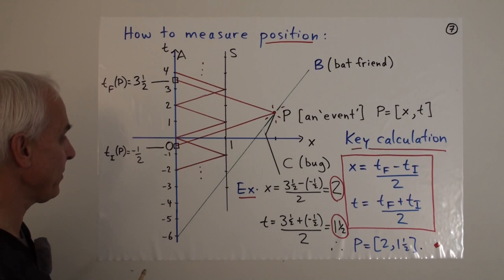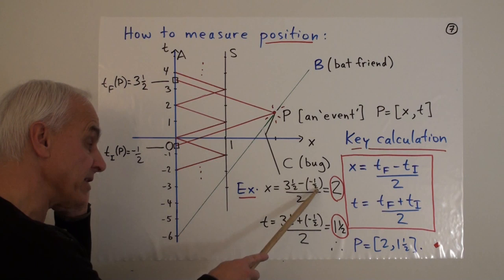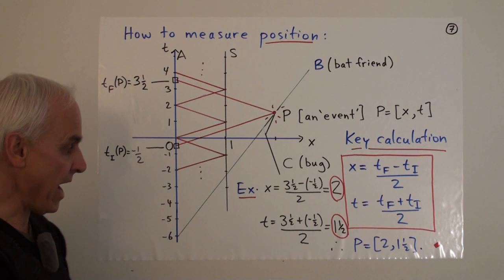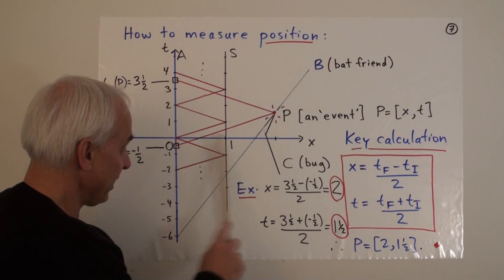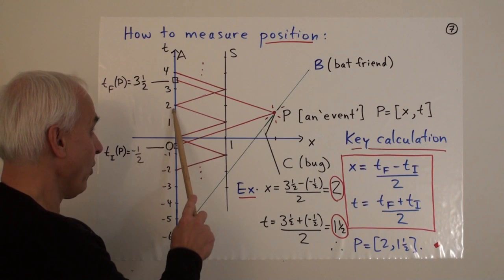So, in our particular situation, we can easily make the computation. tf is three and a half. t sub i is minus a half. So, the x-coordinate is the difference divided by two. So, three and a half minus minus a half is that's three and a half plus a half, or four, divided by two is two. And, the time is three and a half plus minus a half over two, which is three over two, or one and a half. Conclusion, this event happened at position x equals two, and at time t equals one and a half.